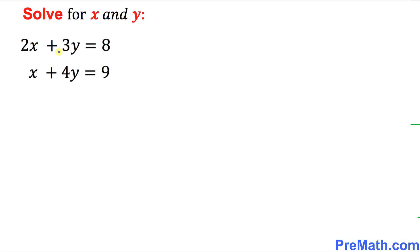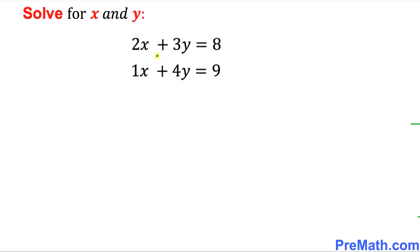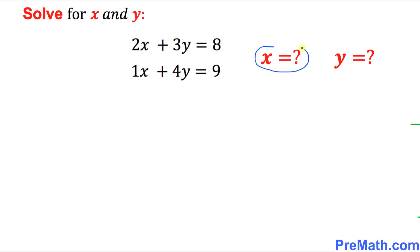Let's solve this system of equations for x and y. The first thing we can notice is that the coefficient of x is missing in the second equation. By default it is always 1. So this equation can be rewritten as: 2x plus 3y equals 8, and 1x plus 4y equals 9. We want to figure out the value of x and the value of y.